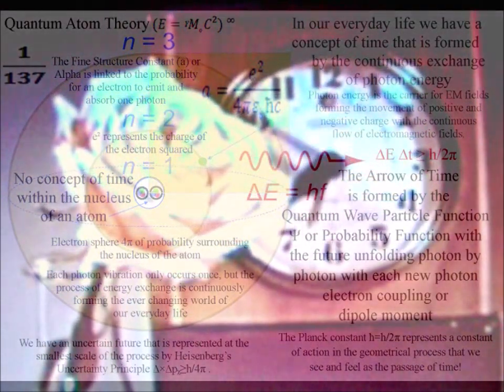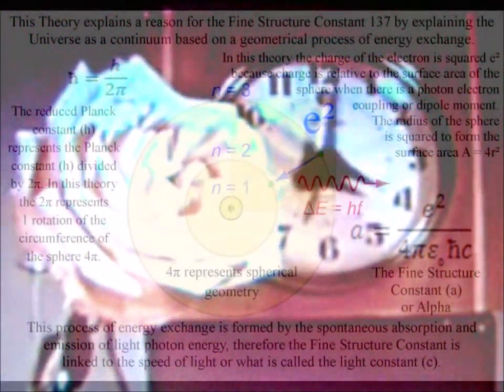This process of energy exchange is formed by the spontaneous absorption and emission of light photon energy. Therefore, the fine structure constant is linked to the speed of light, or what is called the light constant c.